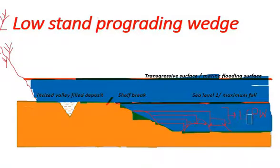Low stand prograding wedge possesses landward facies because these sediments are derived from terrestrial or land environment.